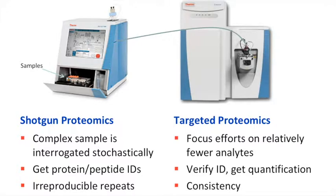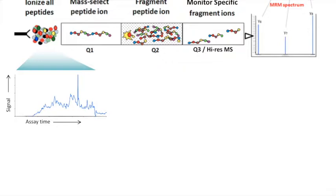In targeted proteomics, we focus on relatively few analytes, verify identification of what we want to measure, and get extremely good quantitative measurements. The key word is consistency — every time we execute the assay, we expect to measure the same analytes across many samples. Functionally, targeted mass spectrometry uses the instrument more as a filtering device than a discovery device. In LC-MS experiments, a mixture of peptides is separated over a column and sprayed into the instrument, generating a total ion current across the entire experiment.